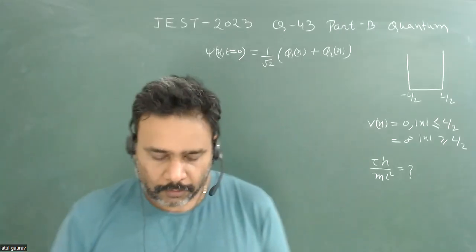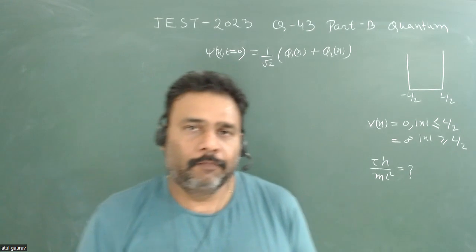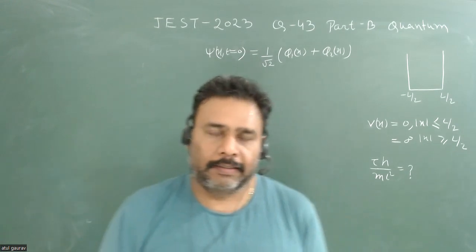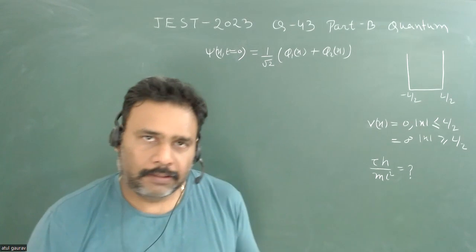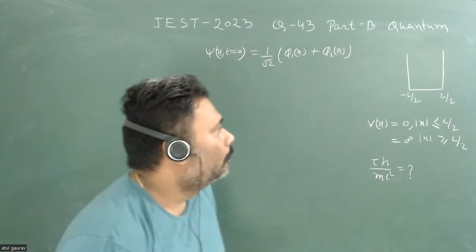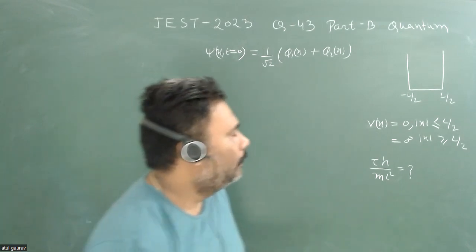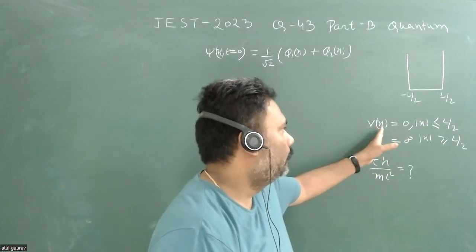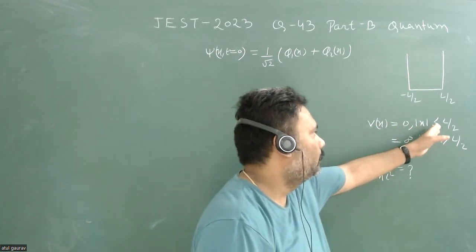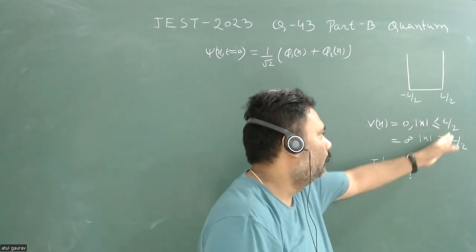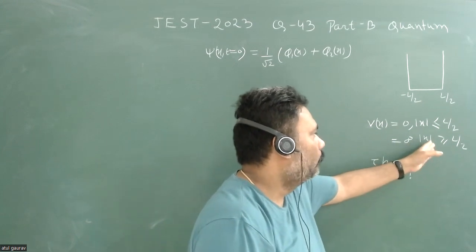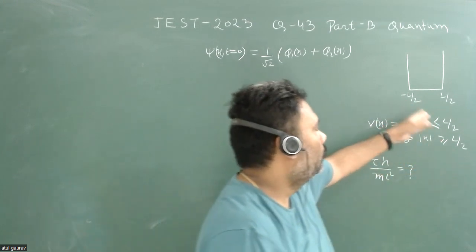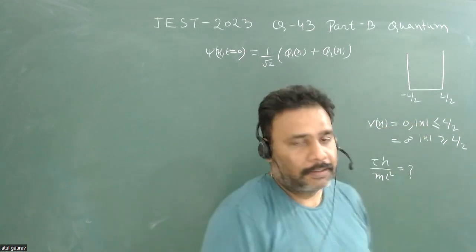Hello students. Let's try to solve one problem from JEST 2023 and this problem is from quantum mechanics. A particle is confined in a box whose potential is given as V(x) = 0 when |x| ≤ L/2 and infinity when |x| > L/2. So between minus L/2 and plus L/2 we have zero potential and otherwise infinite potential.